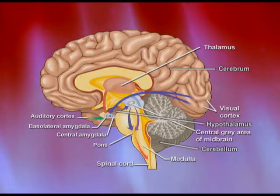The most important part of the forebrain is the cerebrum, also known as the cerebral hemispheres. We have two hemispheres: the right hemisphere and the left hemisphere, and these two serve two different functions. The right hemisphere is meant for all artistic abilities, spatial abilities, and expressive and creative abilities.